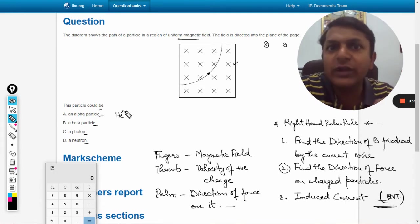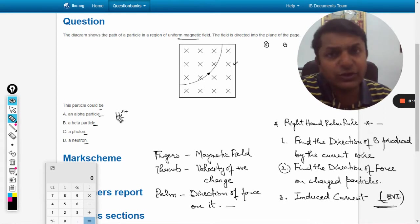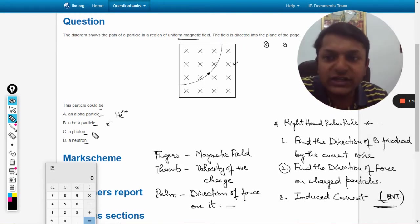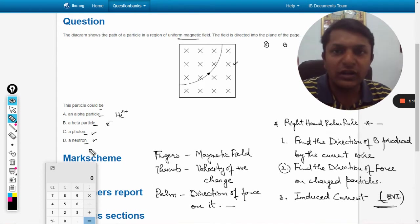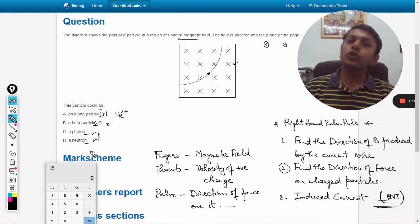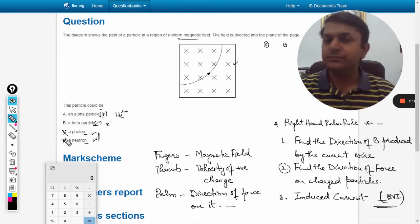A beta particle is essentially an electron, so it is negatively charged. A photon is neutral and a neutron is also neutral. So we have a positively charged particle, a negatively charged particle, and two neutral particles. No force will be acting on the neutral particles, so definitely the answer is neither C nor D—they are out.